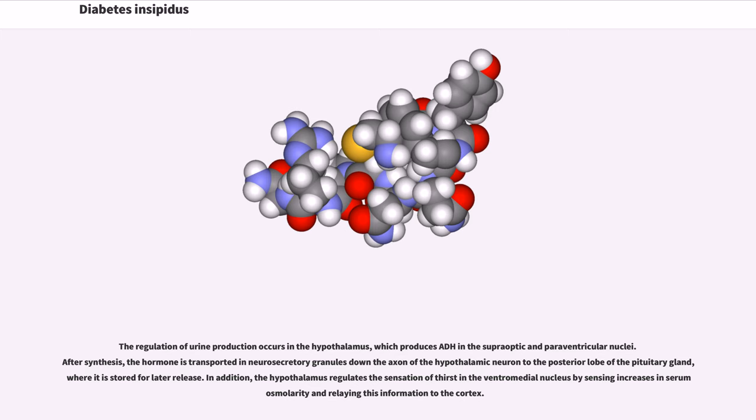The regulation of urine production occurs in the hypothalamus, which produces ADH in the supraoptic and paraventricular nuclei. After synthesis, the hormone is transported in neurosecretory granules down the axon of the hypothalamic neuron to the posterior lobe of the pituitary gland, where it is stored for later release. In addition, the hypothalamus regulates the sensation of thirst in the ventromedial nucleus by sensing increases in serum osmolarity and relaying this information to the cortex.